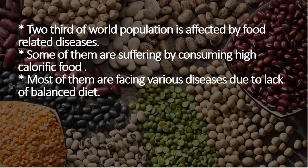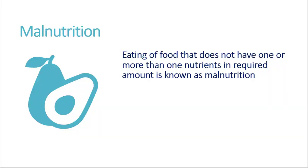Actually, what is happening in the world? Two-thirds of the world population is affected by food-related diseases. Some are suffering by consuming high-calorific food, while most are facing various diseases due to lack of a balanced diet. Lack of a balanced diet means the food they are taking does not contain all the necessary food components. This is called malnutrition — eating food that does not have one or more nutrients in the required amount.